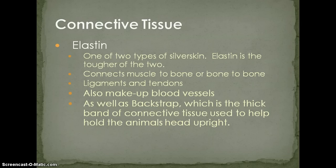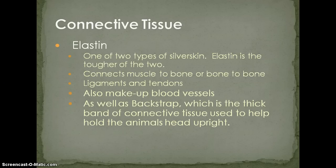Another place elastin is found is in the backstrap — a very thick band of connective tissue that runs down the back of the vertebrae and helps hold the head upright. Compared to a human, a cow has a much thicker backstrap. Humans stand upright and use the two joints in the upper neck called the atlas and the axis, so the head balances. An animal walking on all fours needs the backstrap to hold its head up.